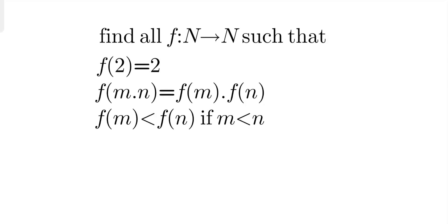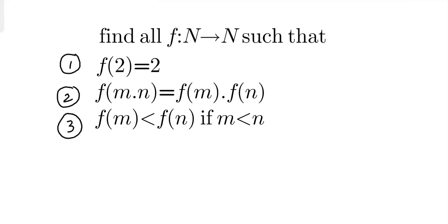The domain of this problem is natural numbers, as you can see here, so we'll solve this question over natural numbers only. One thing to notice: zero is not a natural number, so we'll only have positive whole numbers. Now let's start. I am going to use these properties: the first property is f(2)=2, the second property says f is a multiplicative function, and the third property is that f is strictly increasing.